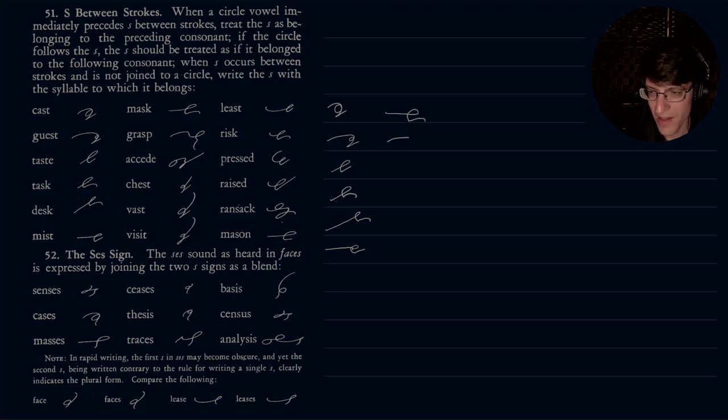Sometimes it's just good to have a guide, even if you don't know exactly what they're talking about. And then you just try and figure out what the stroke is supposed to be based on the example. So that's missed. And then mask. Grasp. A seed. Like to a seed a point. Chest. Vast. Visit. Least.